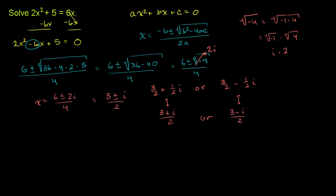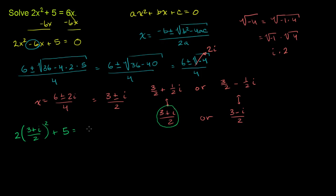Let's first try 3 plus i over 2. It's going to get a little hairy because we have to square it, but let's work through it. We want to verify: 2 times 3 plus i over 2, squared, plus 5, equals 6 times 3 plus i over 2.